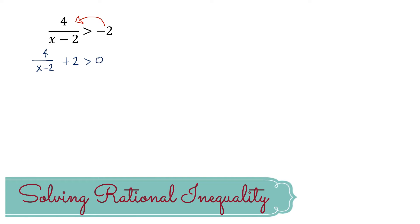Now we have to combine 4 all over x minus 2 with 2. We know that the denominator of 2 is 1, and in order to combine them — adding dissimilar fractions — we get the LCD. Looking at their denominators, they are both non-factorable, so the LCD is simply their product, which is x minus 2.